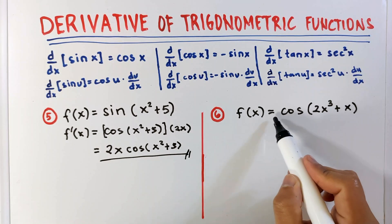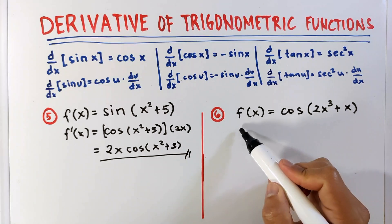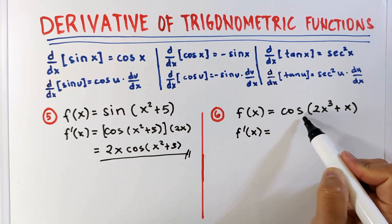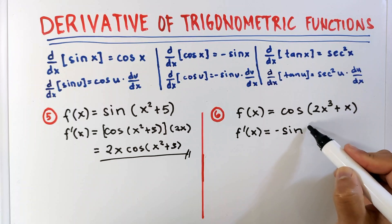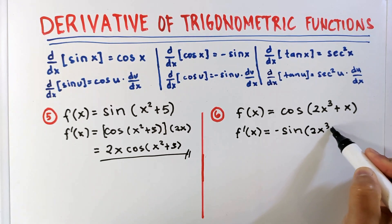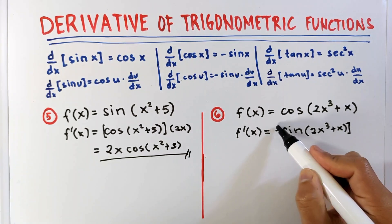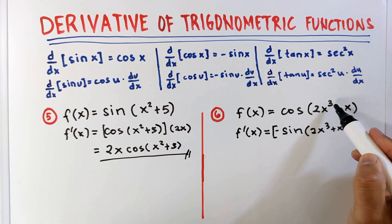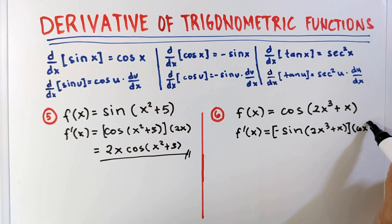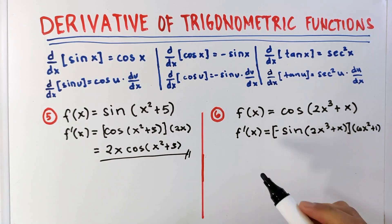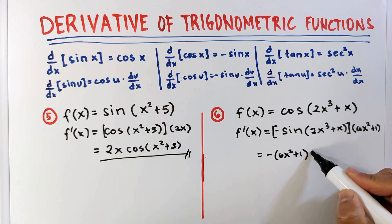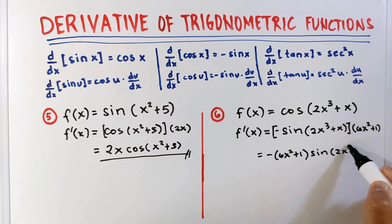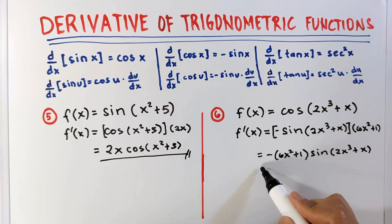Next example: f of x equals cosine of 2x cubed plus x. The derivative is equal to: the derivative of cosine is negative sine, so we have negative sine of the argument — copy 2x cubed plus x — and then multiply it by the derivative of the inner function. The derivative of 2x cubed is 6x squared using the power rule, and the derivative of x is 1. Let's rewrite this as negative, open parenthesis 6x squared plus 1, close parenthesis, times sine of 2x cubed plus x. This is our final answer.